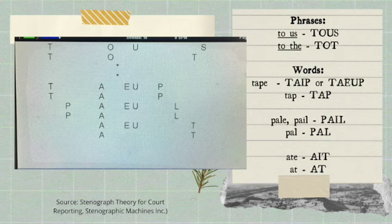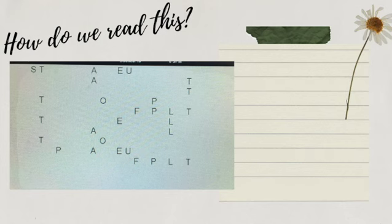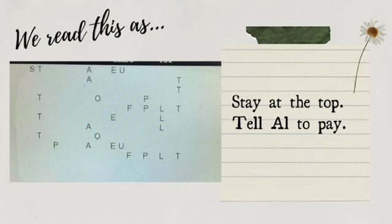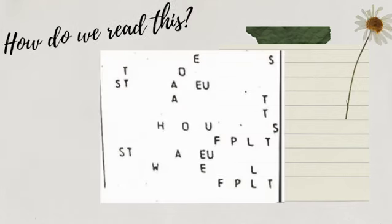So notice there is a difference between long A and short A — long A sound and short A sound. Now let's try to read this one. There are two sentences. I'm giving you three seconds to answer. Three, two, one, zero. The first sentence is 'stay at the top', period. And the second is 'tell Al to pay', period. There you have it — lessons one to five.